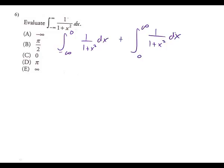Which of the three arc formulas are you going to use? Arc tangent — because this one integrates just to arc tangent of X. So: limit as A approaches negative infinity and limit as B approaches infinity, and use arc tangent. Take a couple of minutes and try it.